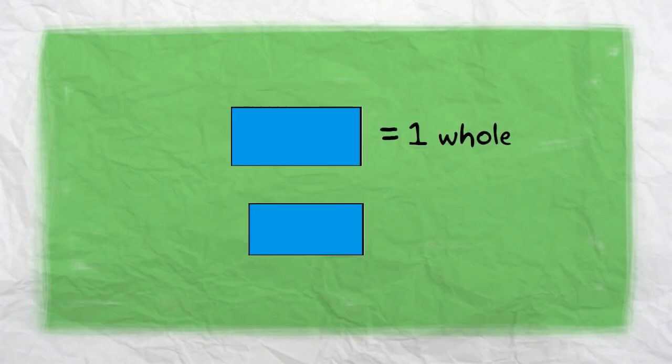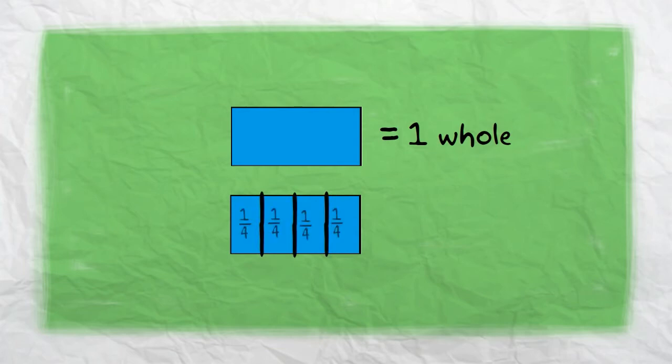Let's look at this rectangle. It equals one whole. The bottom rectangle also equals one whole. And if we chop it up into four equal parts called fourths, four fourths still equals one whole.